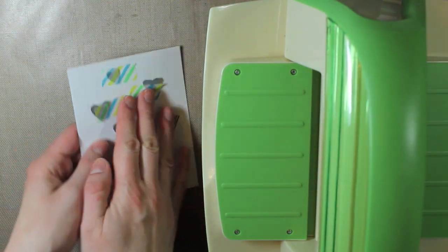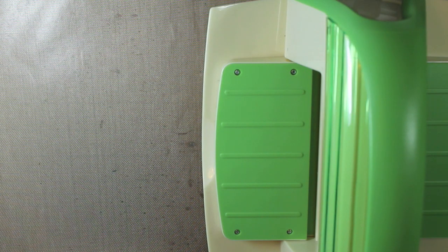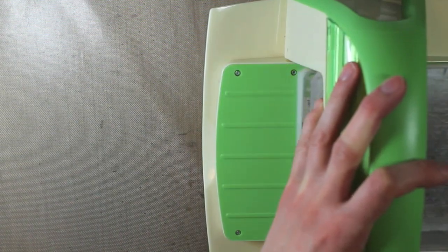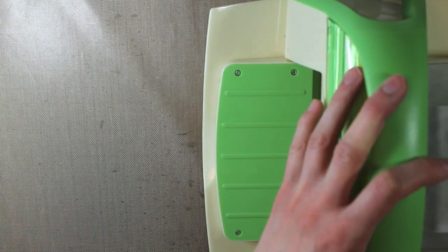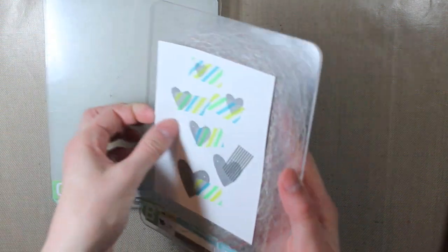So I'll go ahead and put those in between my cutting plates and run that right through. And then that part is going to stay white. I'm going to watercolor the background. So I'll be using some watercolors to color that and then this white piece will be popped up on my card base.